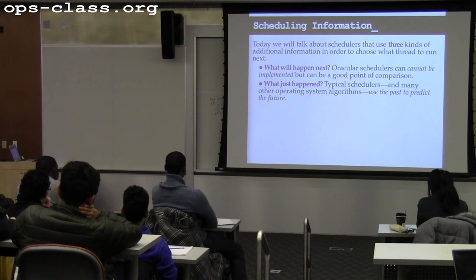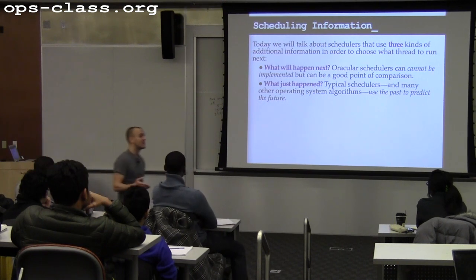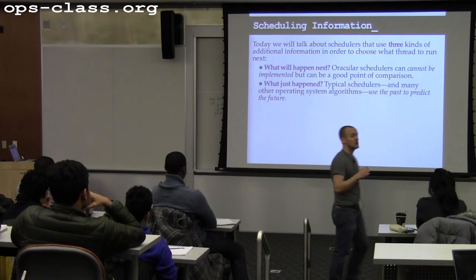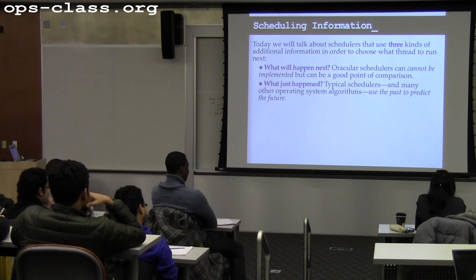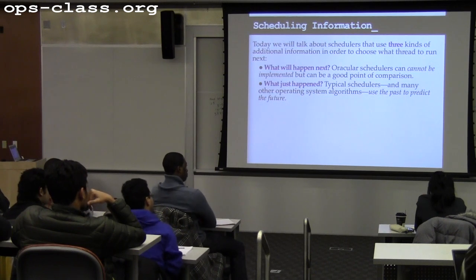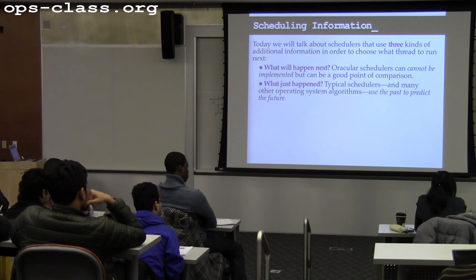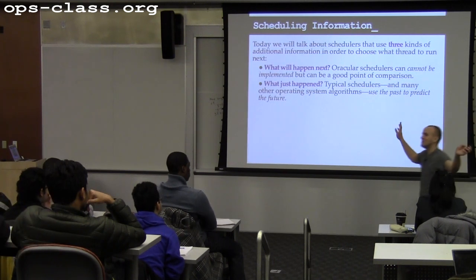Usually what systems do as a substitute for knowing what's about to happen next is use information about what just happened. The mantra is: use the past to predict the future. This is a system design principle — we can't predict the future, but we know what just happened. Sometimes it's not very good, but it's better than nothing.